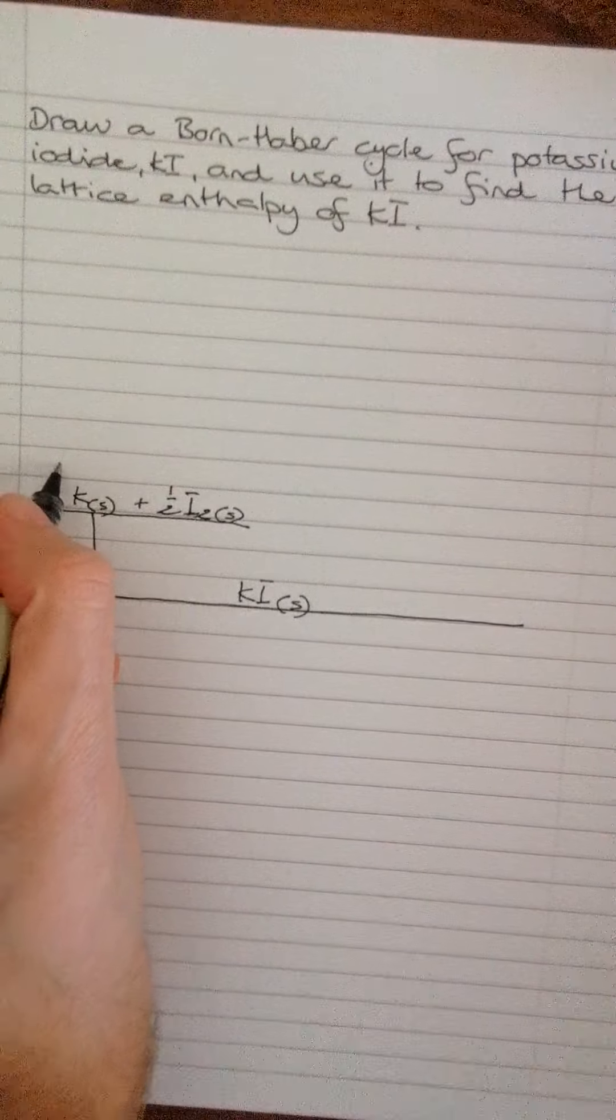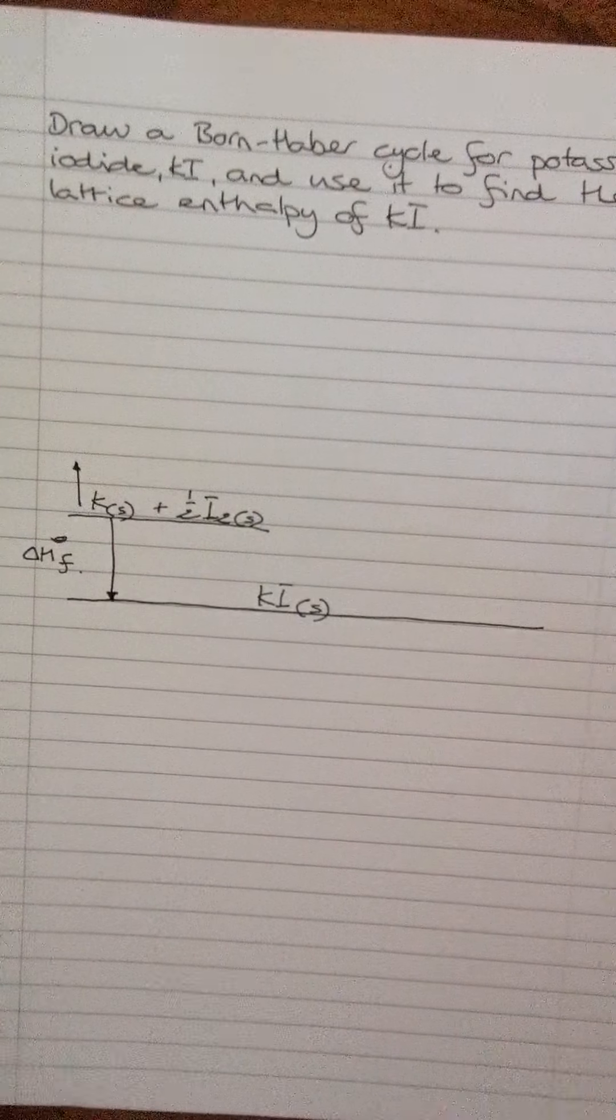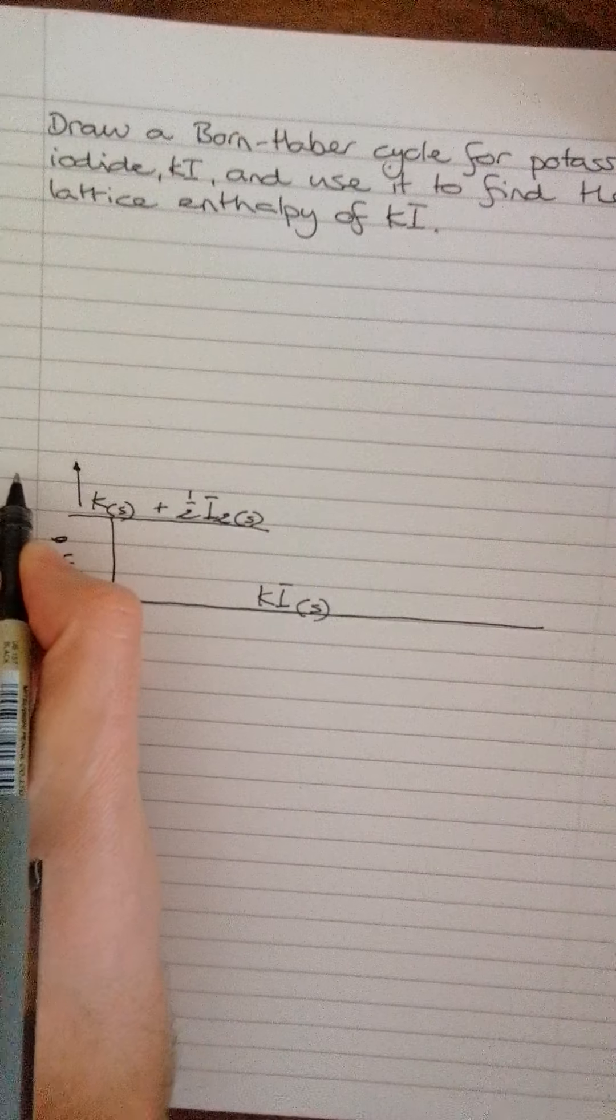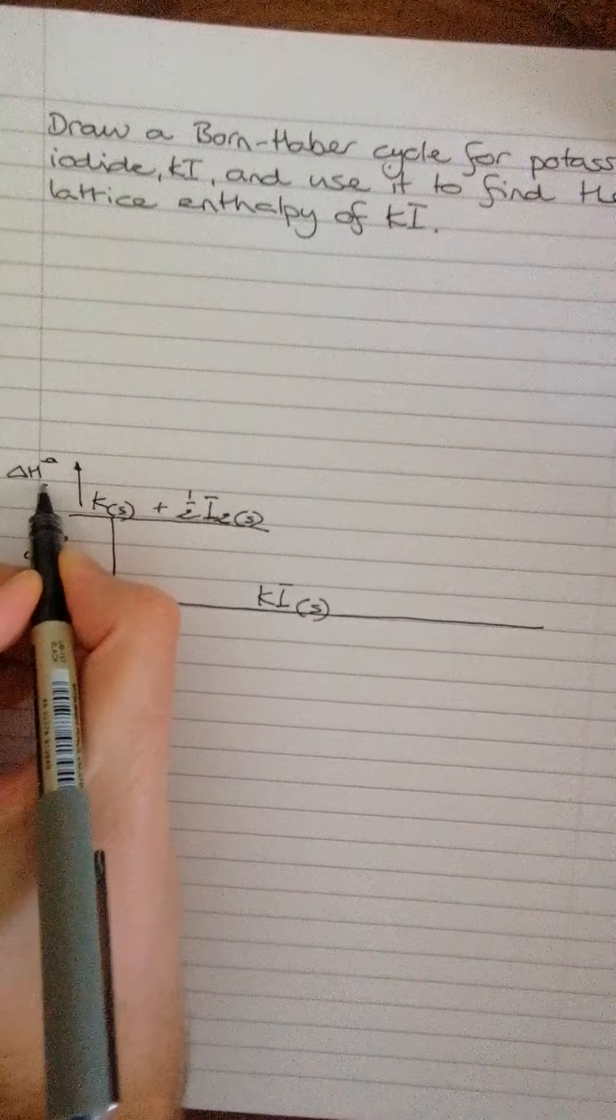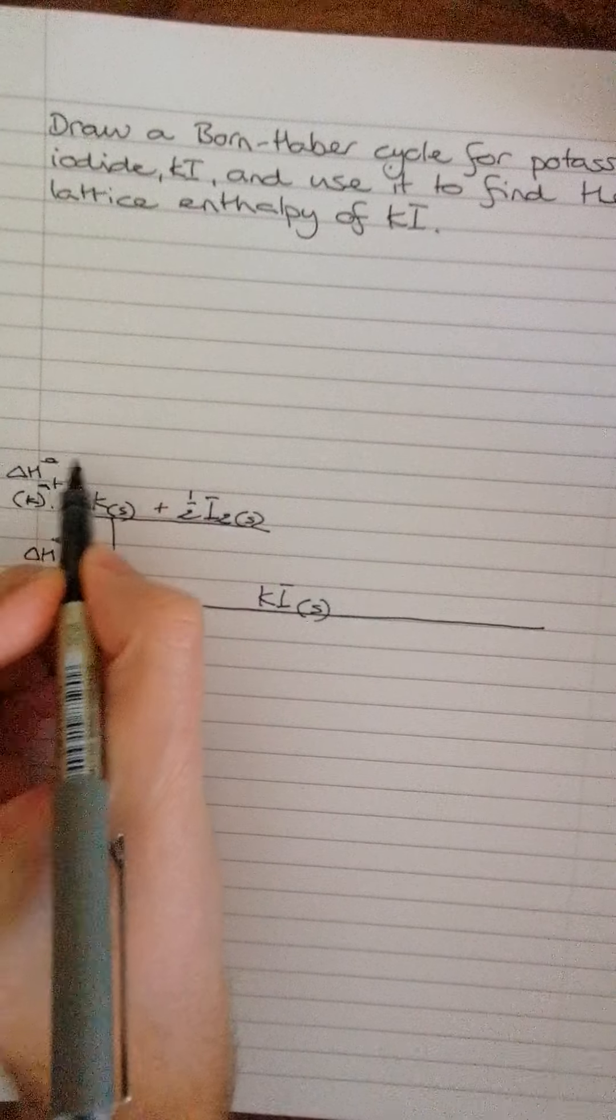So first, always remember in a cycle we go atomization, we go ionization, then electron affinity. So we're going to atomize this first. So we've got delta H standard atomization. We'll do the K first. It's usually the metal we do first.